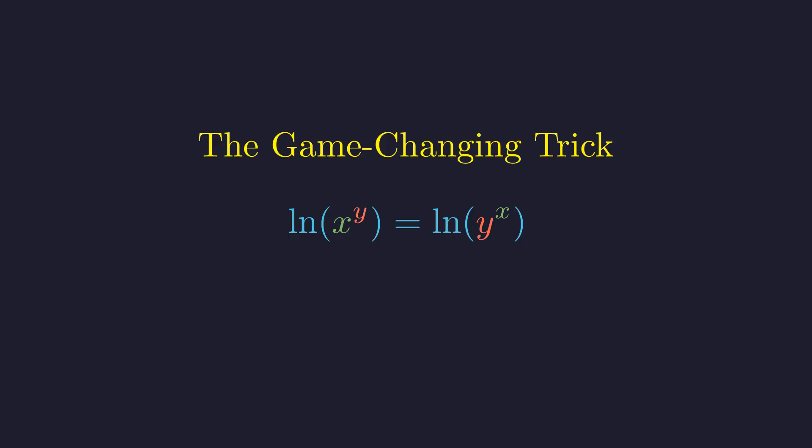Now here comes the magic. We can use the power rule of logarithms to bring those stubborn exponents down to ground level. Beautiful. Now we have y times the natural log of x equals x times the natural log of y. Much more manageable. But we can make this even cleaner.